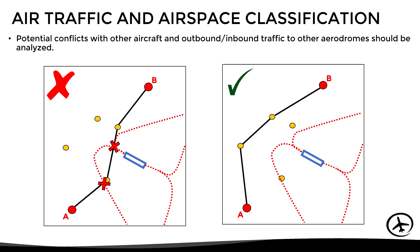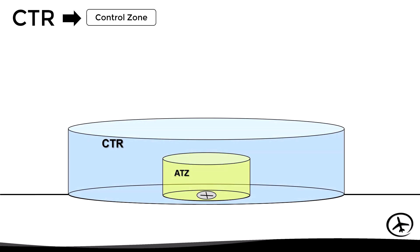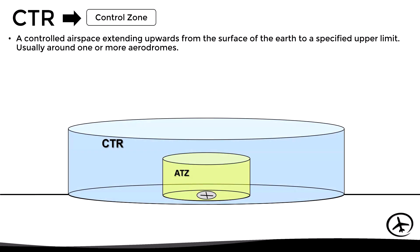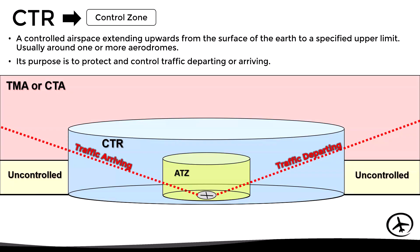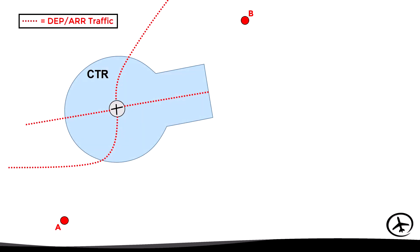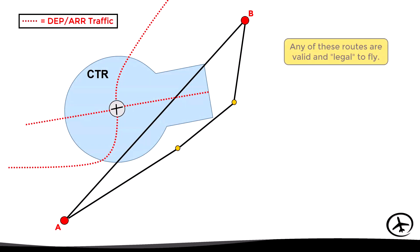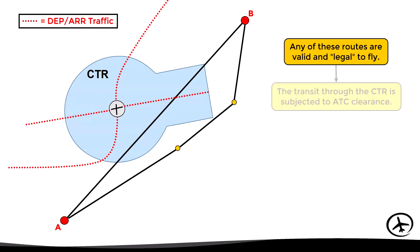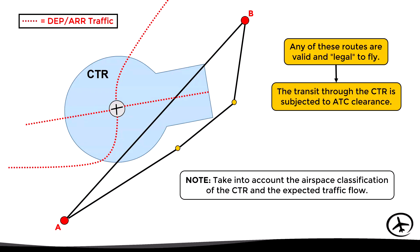To assist pilots with this, a controlled airspace structure is normally established around airports known as a CTR. A CTR, or Control Zone, is an airspace structure that extends upwards from the surface to a specified upper limit, usually around one or more airports. The main purpose of the CTR is to protect and control departing and arriving traffic so that no aircraft can fly through it without an ATC clearance. It is totally legal and valid to fly through a CTR. However, VFR traffic flying near congested airports is normally not allowed to enter the CTR, as it may interfere with departing and arriving traffic. If this is the case, we have to plan a route that goes around the airspace.